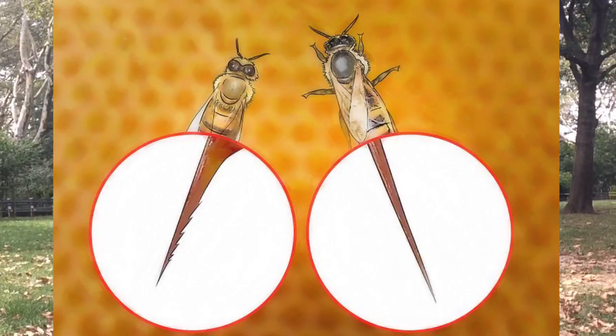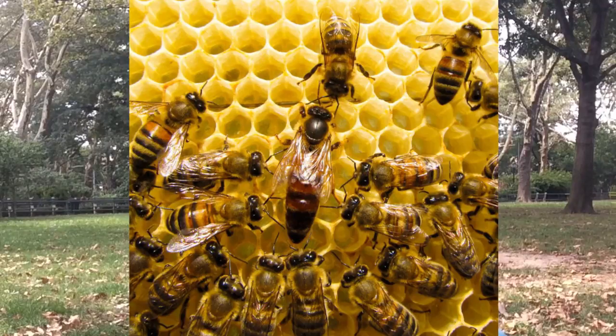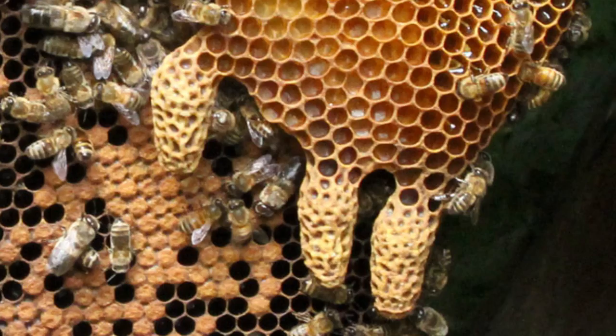Honeybee queens have unbarbed stingers, which gives them the power to sting multiple times. Unlike the honeybee workers, who have barbed stingers they lose after one use and then quickly die afterwards, queen bees have stingers for one purpose only. When a honeybee hive has a new colony cycle, they typically rear three or four queens in case something happens to one. So when a queen emerges from her cell, she will hunt down all the other queens and sting her sisters to death through their cells. That is the one and only reason that queen bees have stingers, and shows the power of the first strike.